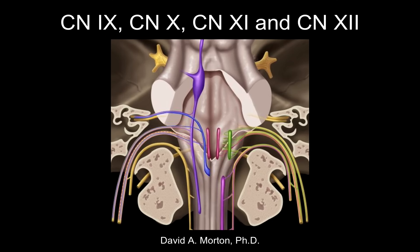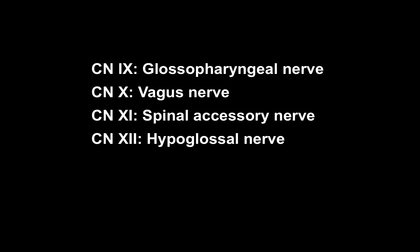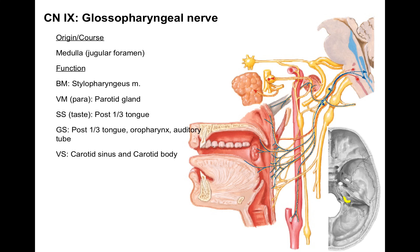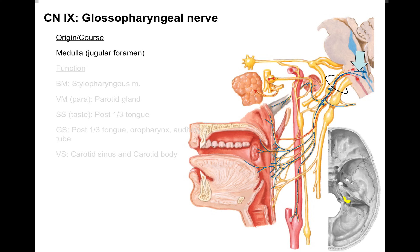Let's talk about cranial nerves 9, 10, 11, and 12. Cranial nerve 9 is the glossopharyngeal nerve. This nerve arises from the medulla oblongata, along with cranial nerves 9, 10, 11, and 12. It courses through an opening called the jugular foramen, shown in yellow at the bottom of the picture of the base of the skull.